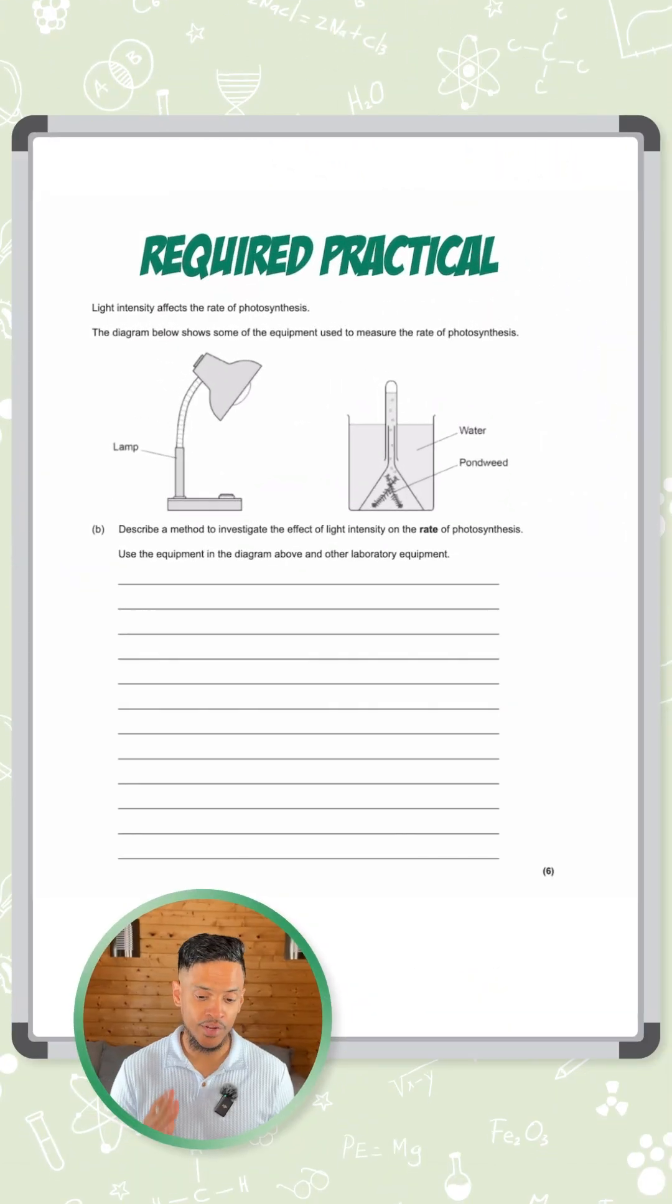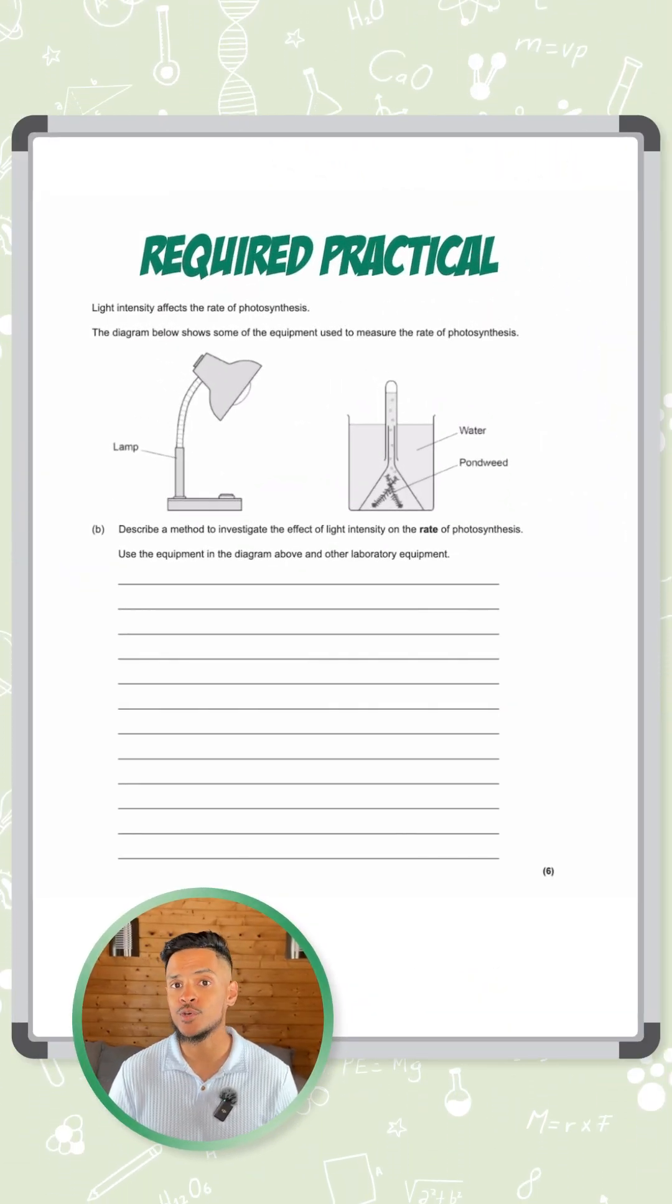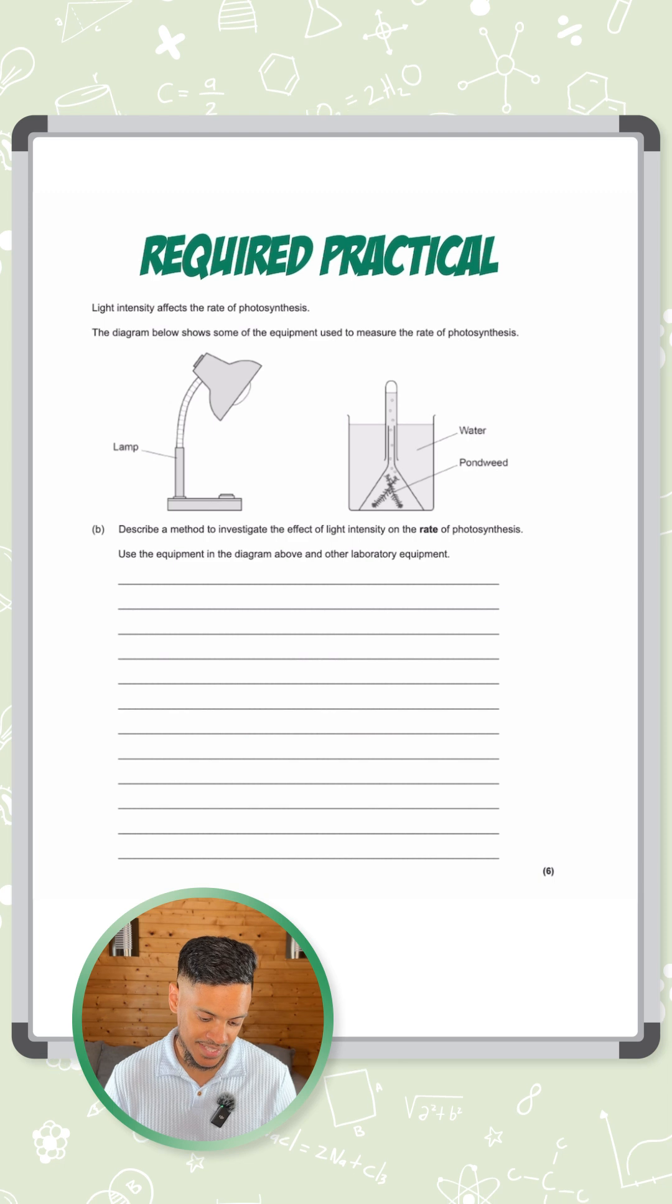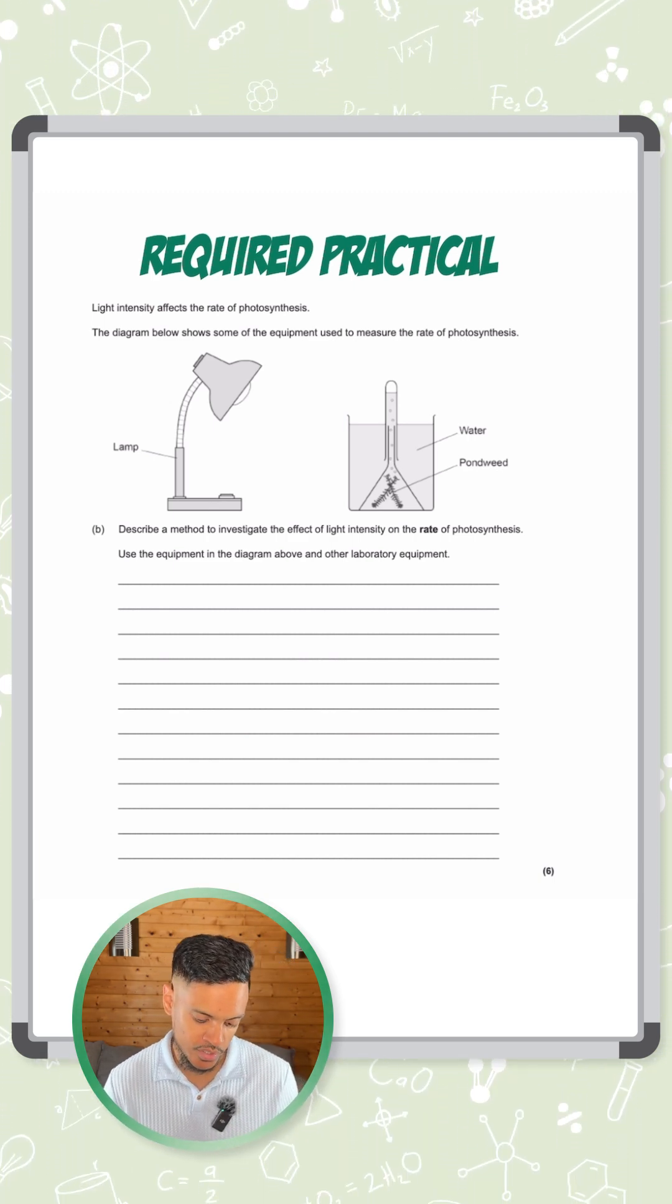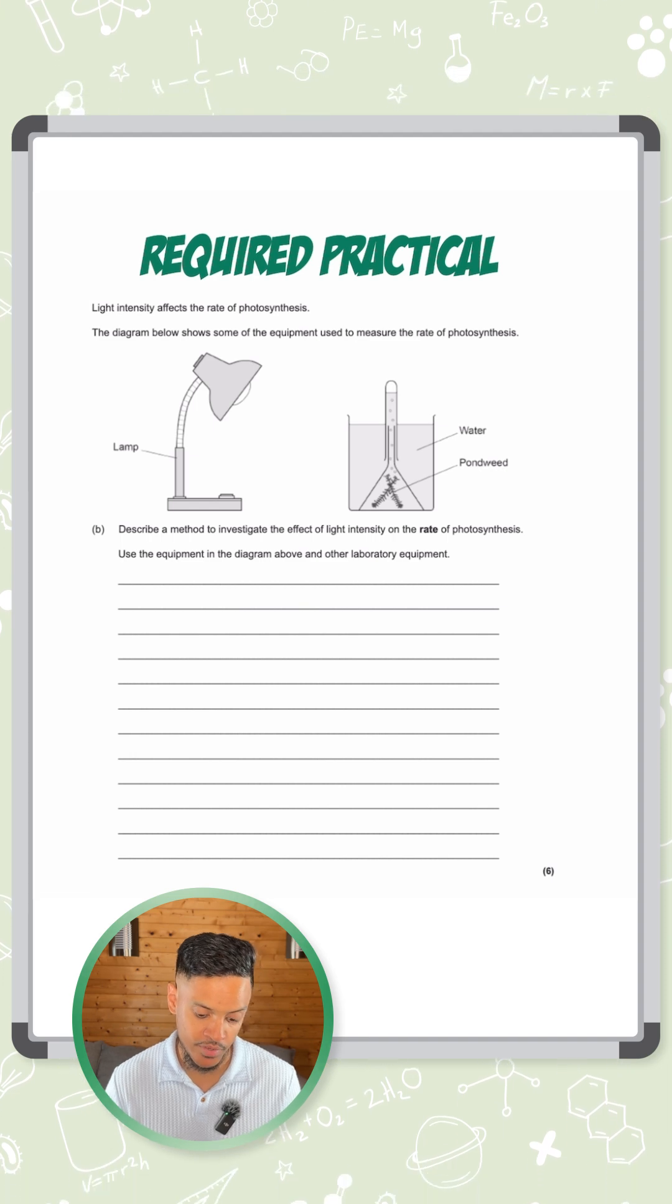We have a six marker here on the required practical on photosynthesis. It says light intensity affects the rate of photosynthesis. The diagram below shows some of the equipment used to measure the rate of photosynthesis.